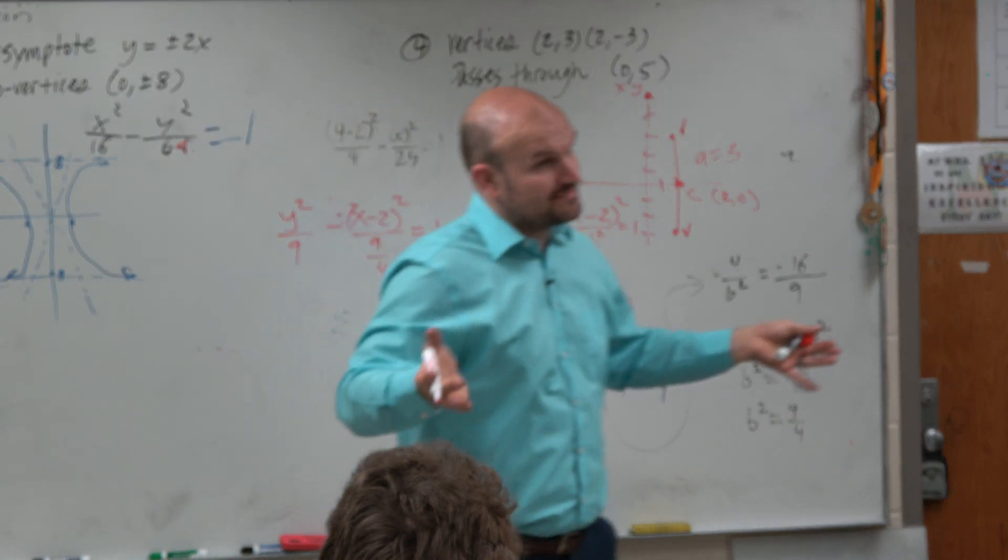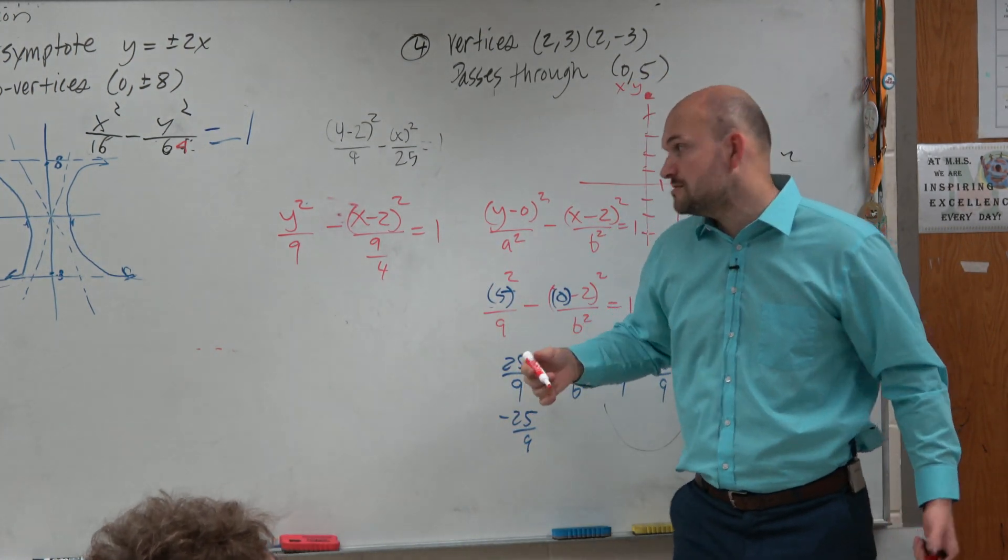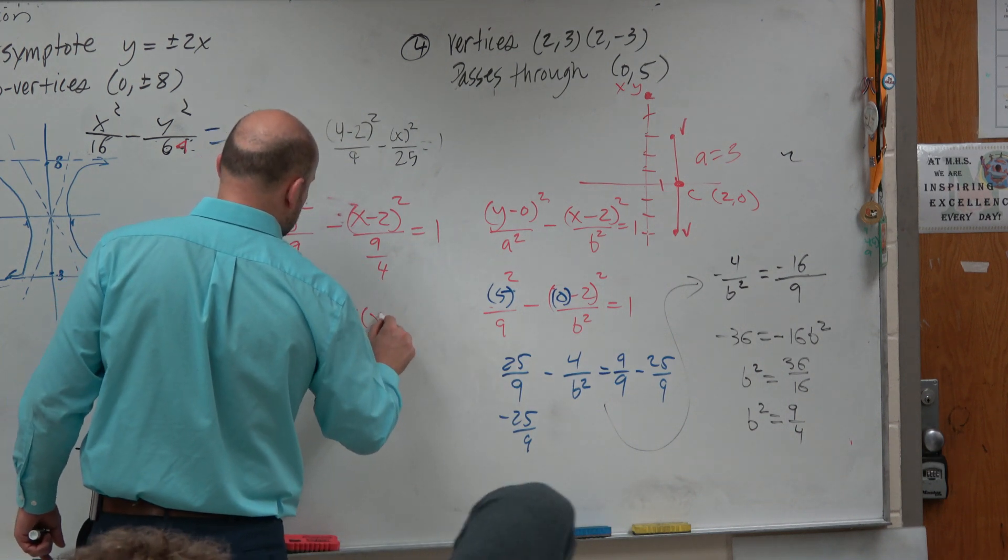Now, that is correct, but that wouldn't be considered simplifying. Divided by a fraction is the same thing as multiplying by the reciprocal. So a more simplified version, which you would see on a multiple choice test, would look like this.